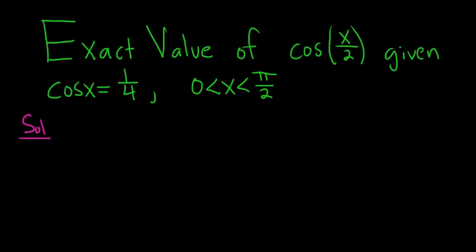So in this problem we're going to use one of the half number identities. The half number identities for cosine are cosine of x over 2 equals plus or minus the square root of 1 plus cosine x all over 2. The one for sine is the same, except it has a minus here.